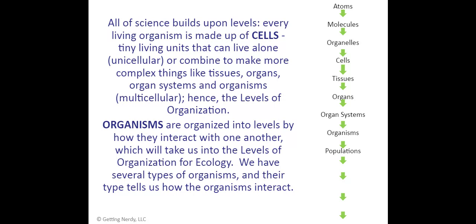Organ systems all together make organisms, like us — we have a digestive system, cardiovascular system, lymphatic system, and skeletal system. Organisms together make populations, populations turn into communities, communities turn into ecosystems, and ecosystems turn into biospheres. We will talk about all of these — populations, communities, ecosystems, and biospheres — in just a minute.